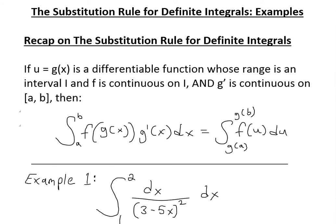is continuous on interval a to b. Basically, if you have an integral from a to b of f of g of x times g prime of x dx, then you can write it equals the integral of f of u du, where u equals g of x, du equals g prime of x dx, and you plug in a to get g of a and b to get g of b as the new limits. You can see the proof of this in the video links below.